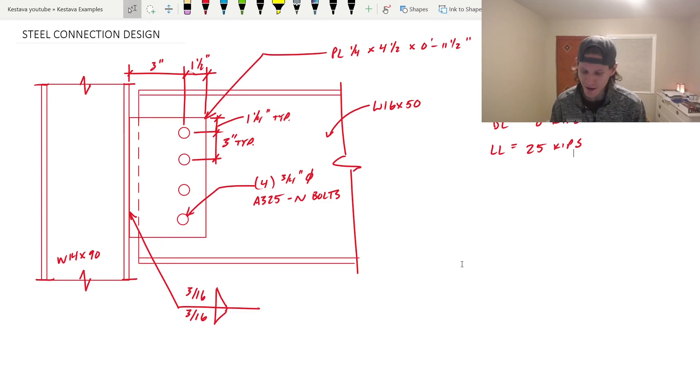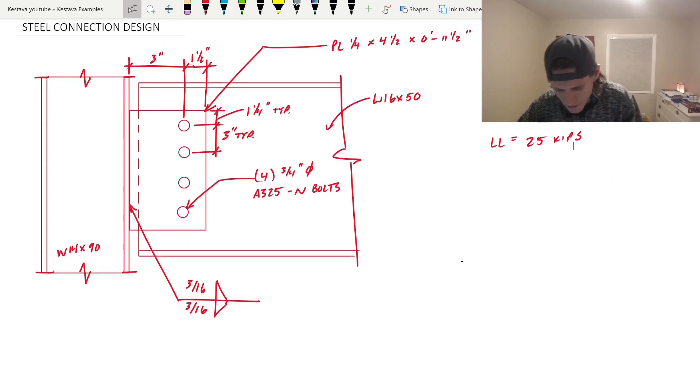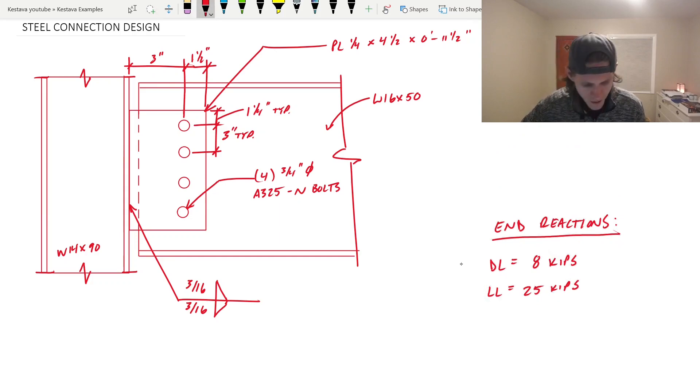Here we are. We have a steel wide flange column, your W14 by 90, and you have your steel W16 by 50 wide flange beam that is connecting with a shear tab to your column. That shear tab is welded to the column flange and the web of the beam is bolted to the shear tab. We have all of our parameters: weld sizes called out, bolt sizes, type of bolts, spacing of bolts, plate dimensions, and the size of our beam and column respectively.